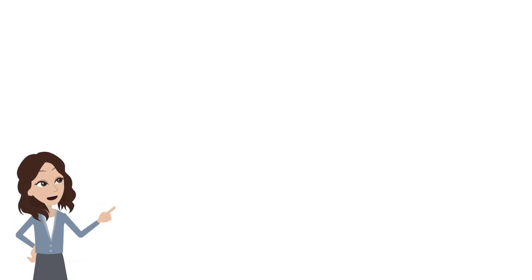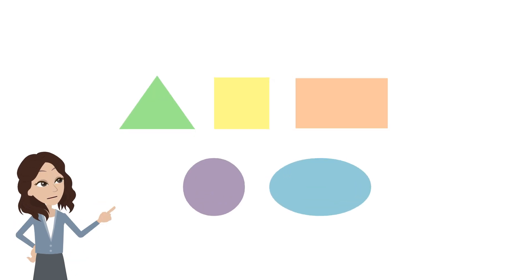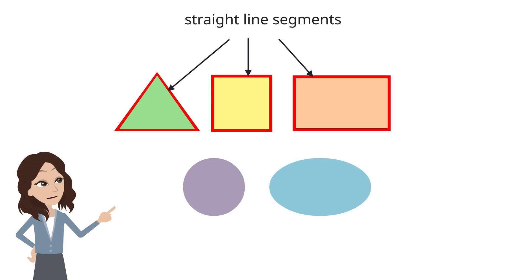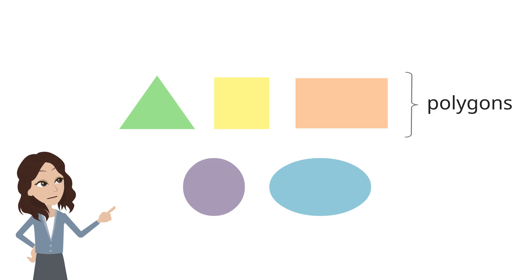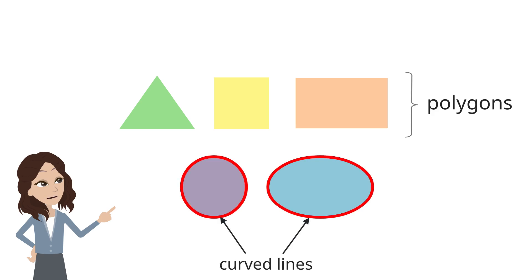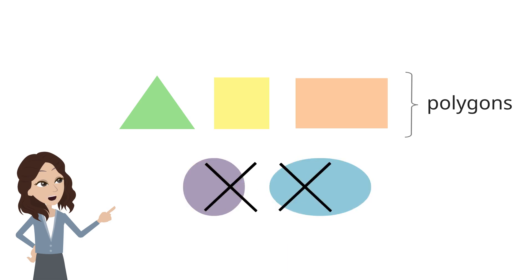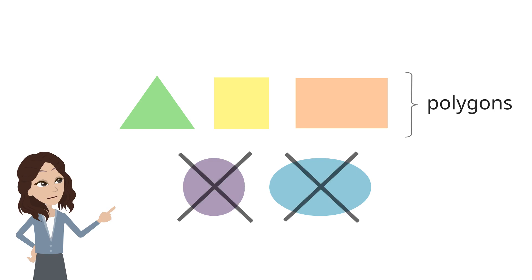Let's look at these shapes. Which shapes are polygons? Pause and discuss with your friends. The triangle, square, and rectangle are closed shapes made up of straight line segments, so they are polygons. The circle and ellipse are closed shapes formed using curved lines, so since they are not made of straight line segments, they are not polygons. Now let's look more closely at each polygon.